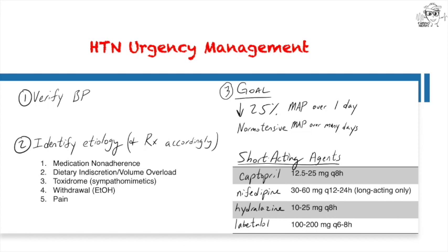If you've excluded end organ damage, you can proceed with treating hypertensive urgency. Now, urgency is a misnomer — you do not need to rush to decrease the blood pressure. It's more prudent to first verify your blood pressure with an appropriately sized cuff in more than one extremity. Next, address underlying etiologies prior to administering any meds, such as volume removal for volume overload, support for toxidrome or withdrawal — especially alcohol with benzodiazepines — or pain control. If you choose to use antihypertensive agents, you can use captopril, nifedipine, or oral hydralazine, but make sure not to decrease more than 25% of the MAP over the course of the first day.